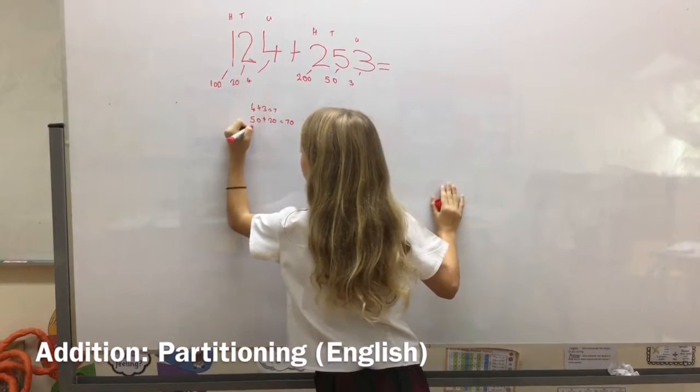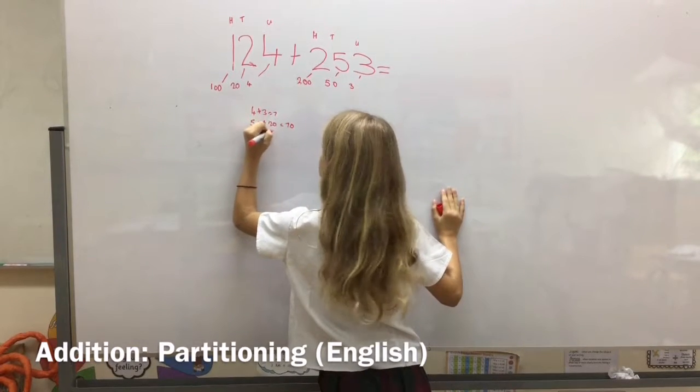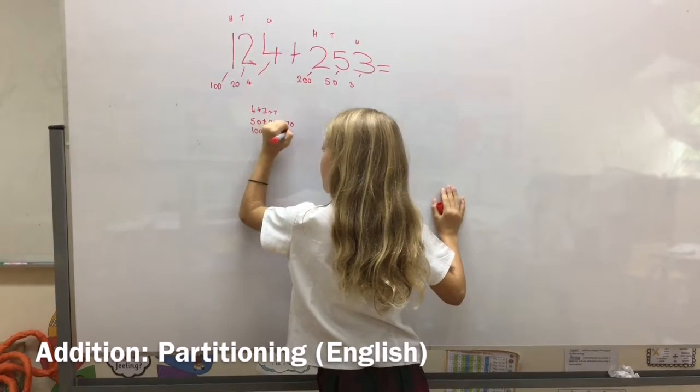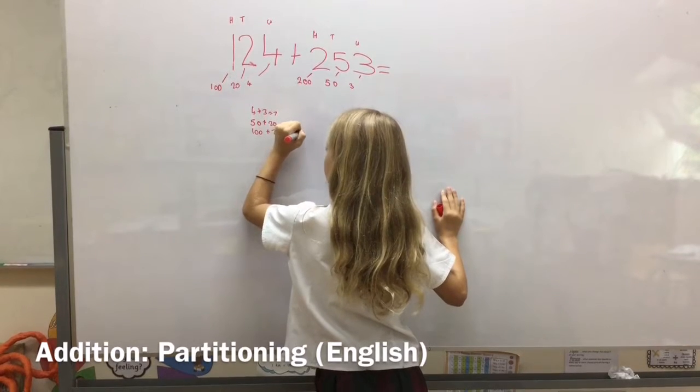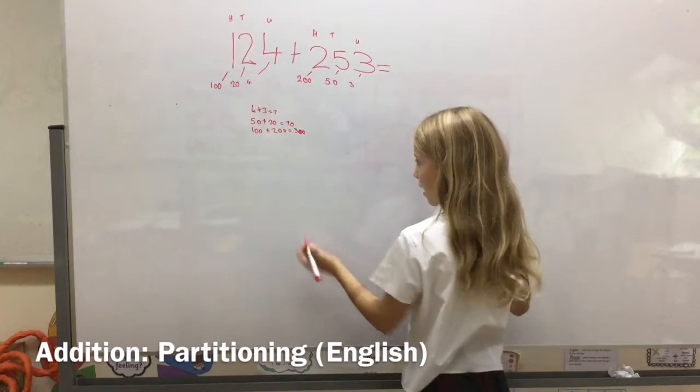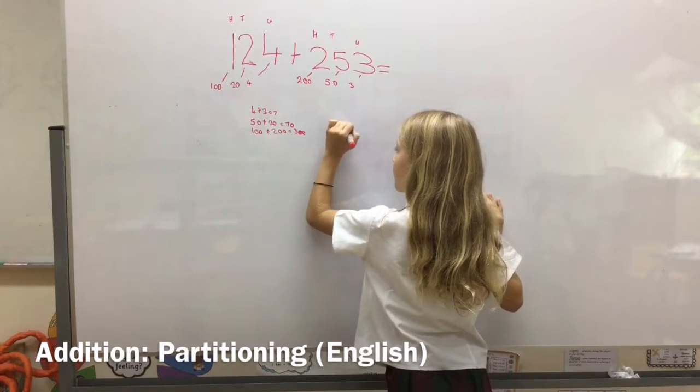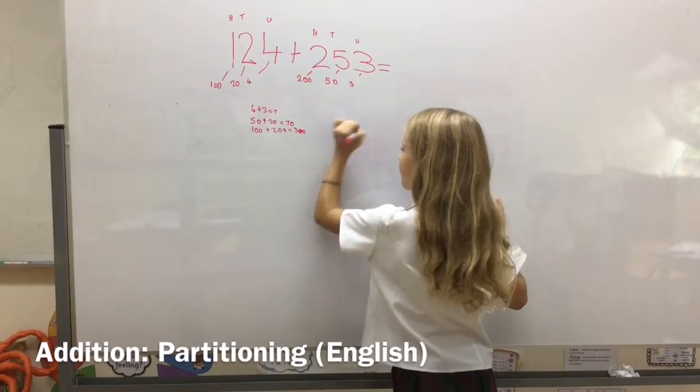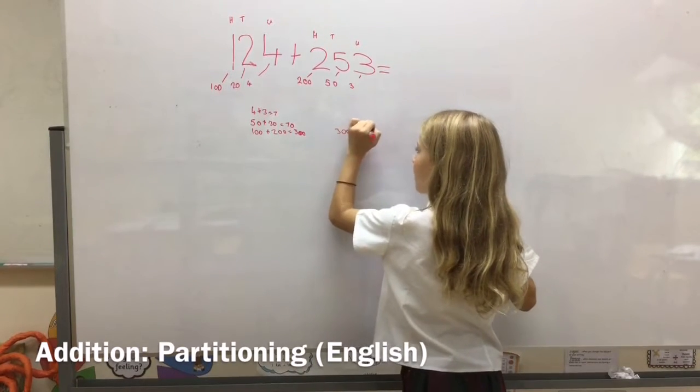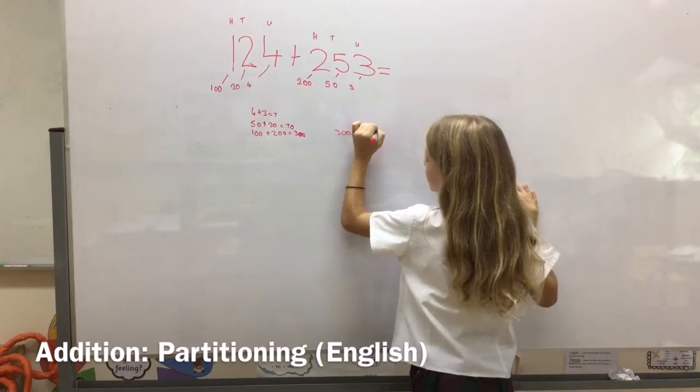And 100 plus 200, which equals 300. So now we're going to be doing 300 plus 70 plus 7.